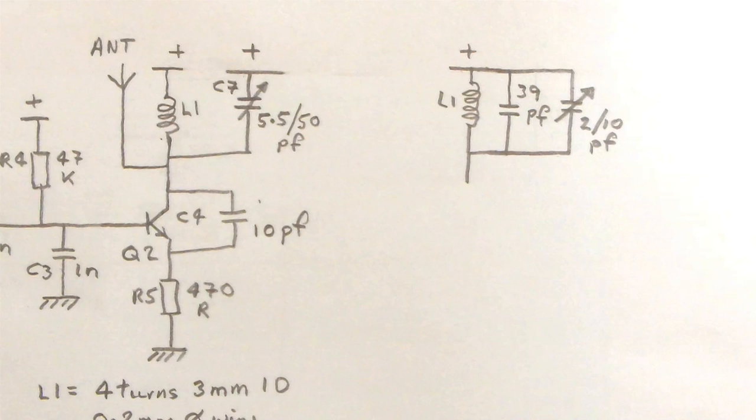They had L1 as 5 turns with a 1/8 inch diameter. And by the way, I've got 4 turns with a 3 mm diameter.